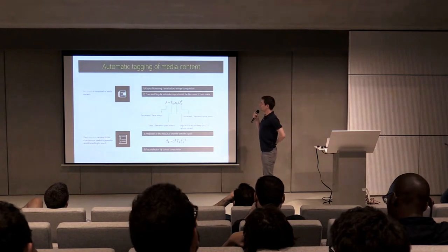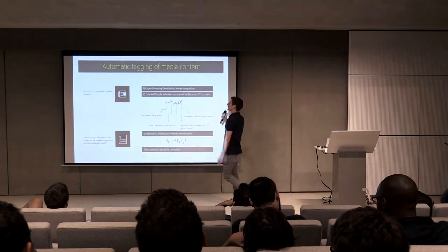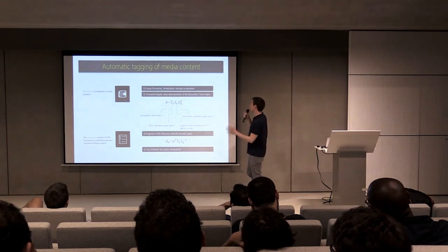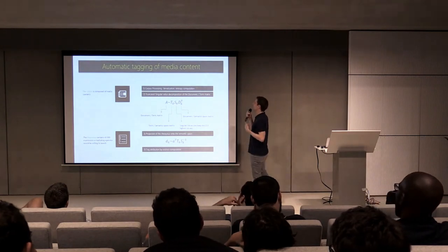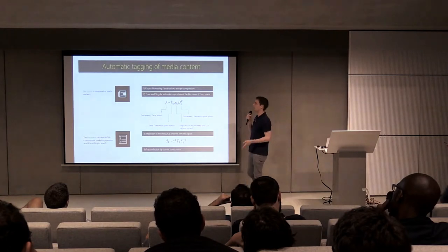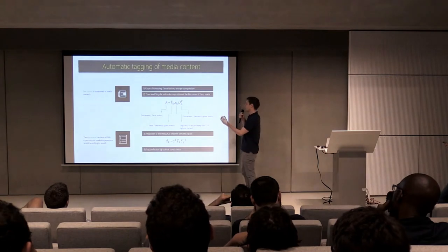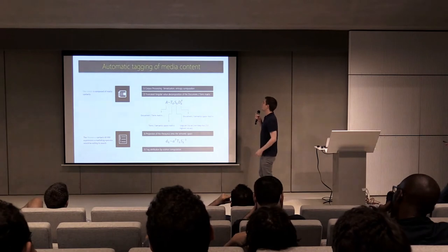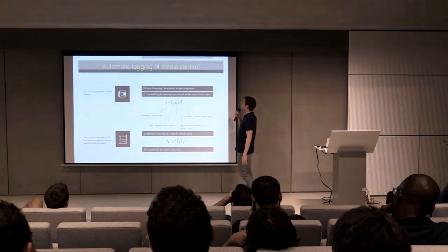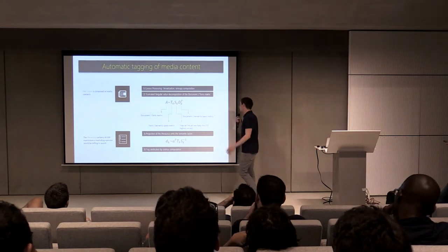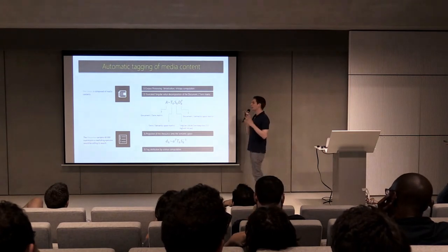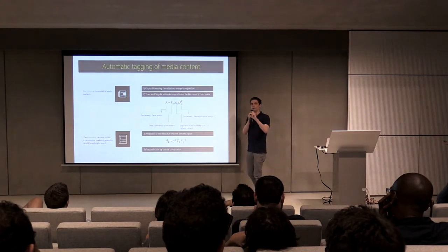For automatic tagging, we used latent semantic analysis. We start with the corpus — all articles published on the web by the Prisma Group. We do text processing: corpus processing, lemmatization, and entropy computation. Then we build a document matrix where each row is a document and each column is an expression, and at the intersection is a function of the occurrence of the word in the document and its entropy. Then we perform a truncated singular value decomposition of this matrix, keeping about 250 highest singular values. This gives a semantic space of 250 dimensions where we can project all documents as vectors of 250 dimensions.